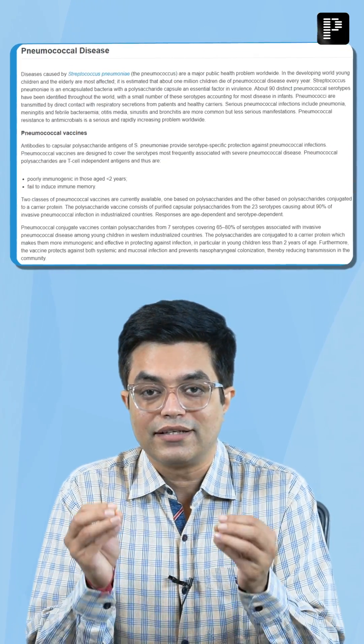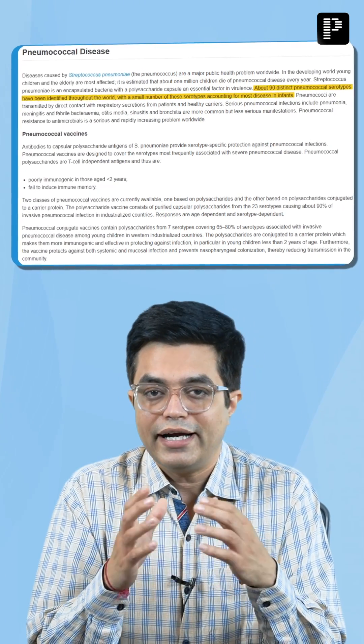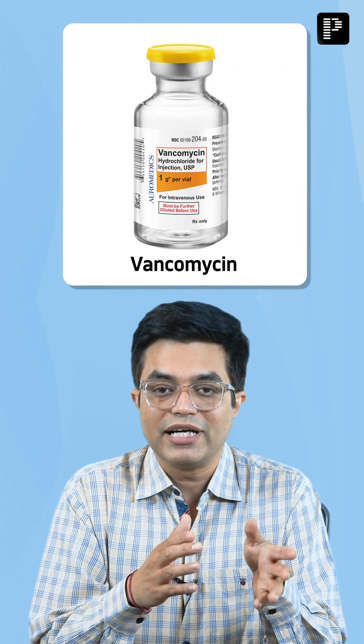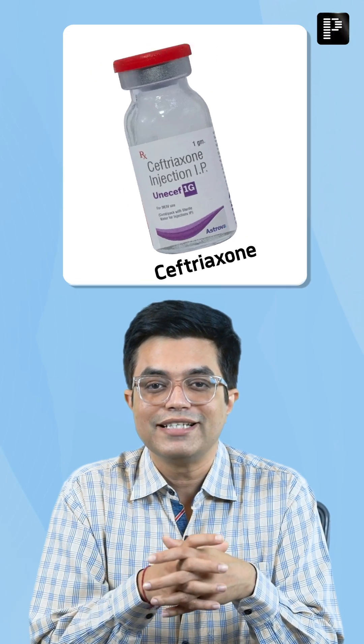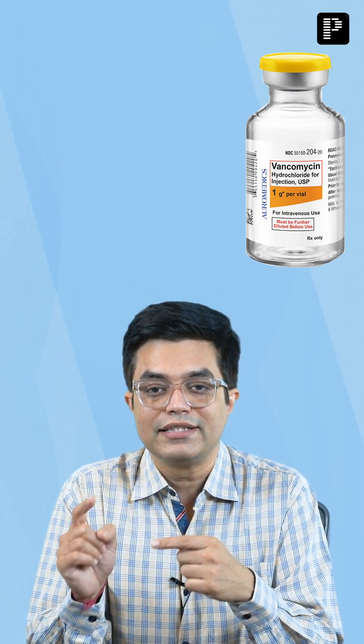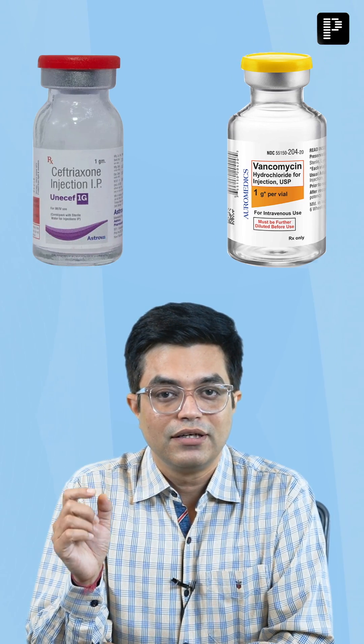However, the point to note: IAP 2022 pediatric update related to India says that with time, resistant pneumococcus is increasing worldwide and it is increasing in India also. That is why vancomycin should be added with ceftriaxone. To summarize, IAP 2022 says vancomycin with ceftriaxone should be the initial empirical management in pyogenic meningitis.